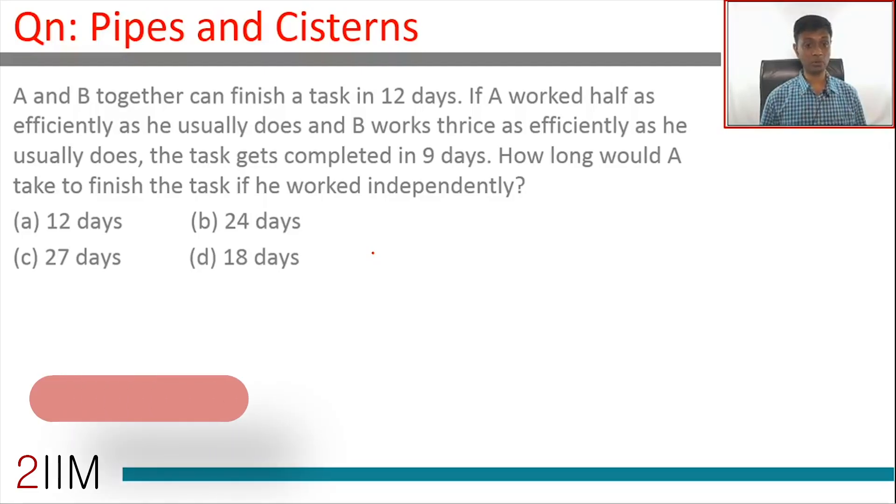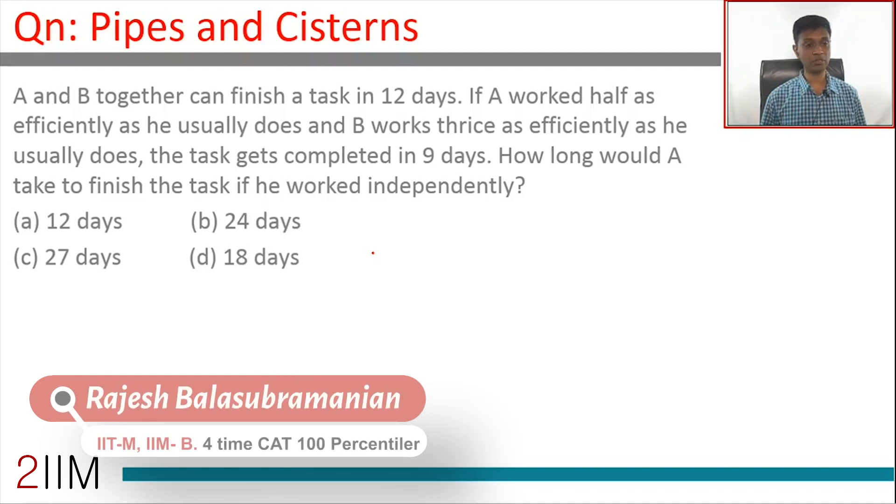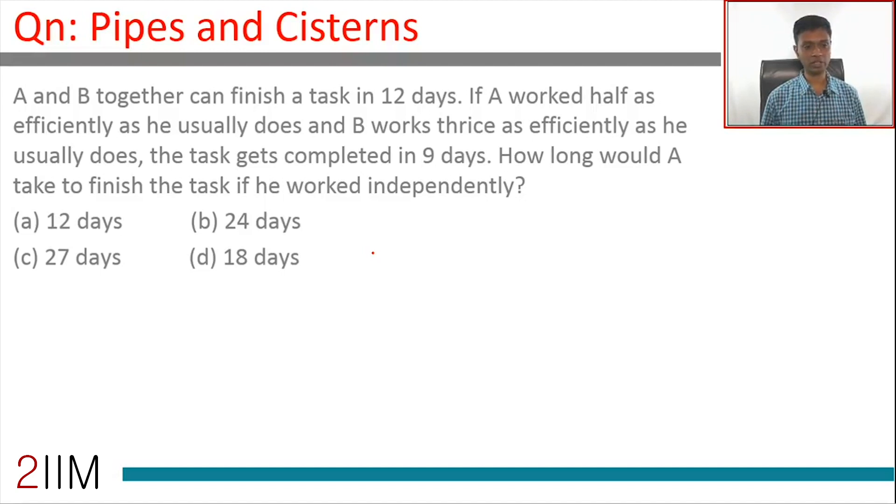A and B together can finish a task in 12 days. If A worked half as efficiently as he usually does and B works thrice as efficiently as he usually does, the task gets completed in 9 days. How long would A take to finish the task if he worked independently? Let's make the basic assumption and then we'll go on to the solving part.